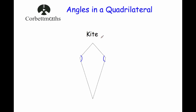Our next special quadrilateral is a kite. A kite has a line of symmetry vertically through the top and the bottom. So the two opposite angles on the sides are equal to each other. For instance, if one side angle is 140 degrees, the opposite one would also be equal to 140 degrees.